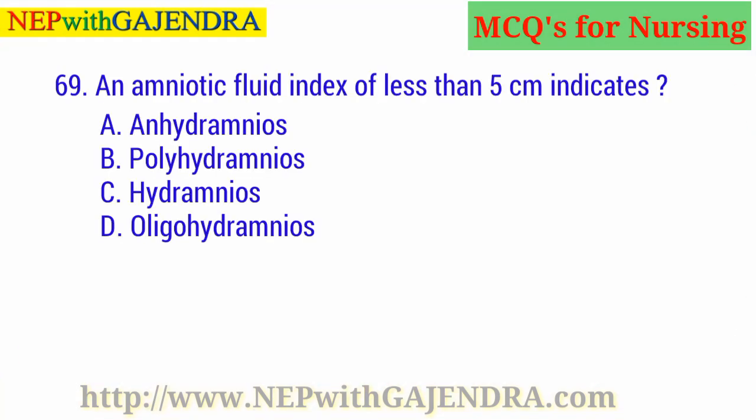An amniotic fluid index of less than 5 cm indicates: A. Anhydramnios. B. Polyhydramnios. C. Hydramnios. D. Oligohydramnios.